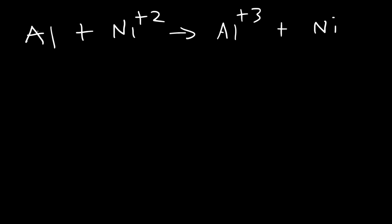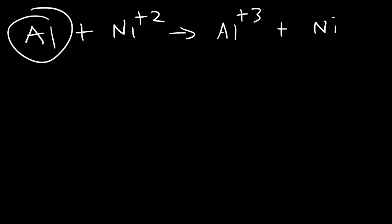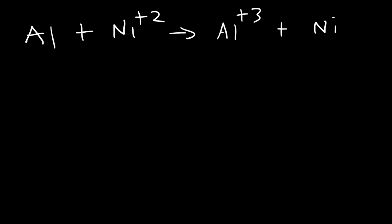In this example we have one aluminum atom and ion on both sides, and we have a nickel particle on the left and one on the right. So the atoms are balanced, but the charges are not. The left side contains a net charge of positive 2, and the right side contains a total charge of positive 3. So this reaction is not balanced yet.